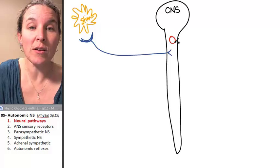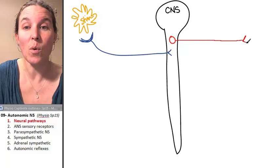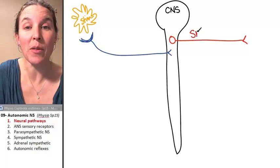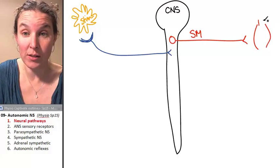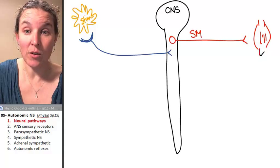One of our options for action was the somatic motor pathway, and that included all neurons that innervate skeletal muscle.